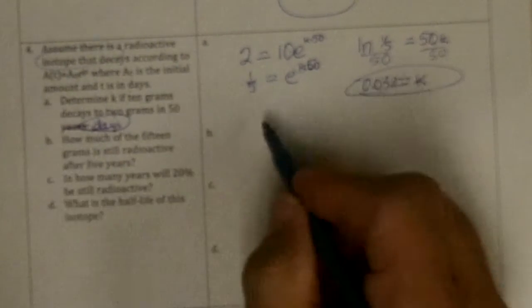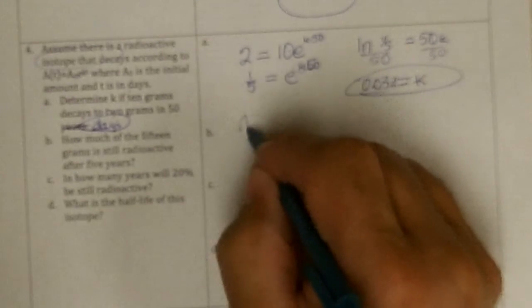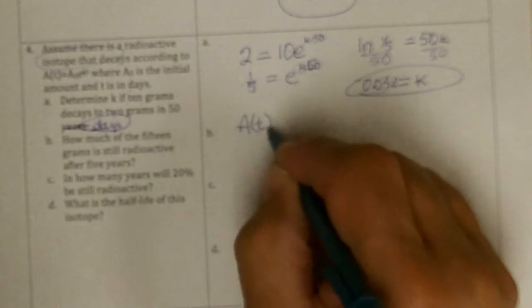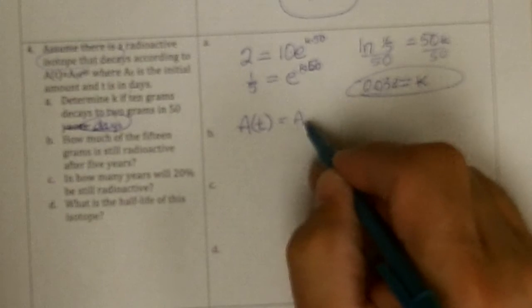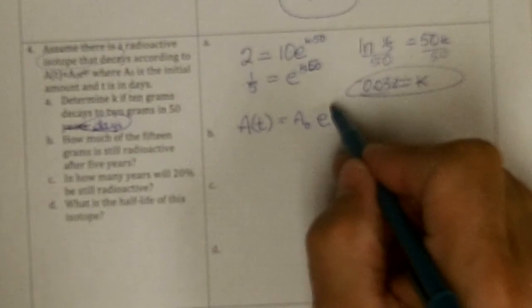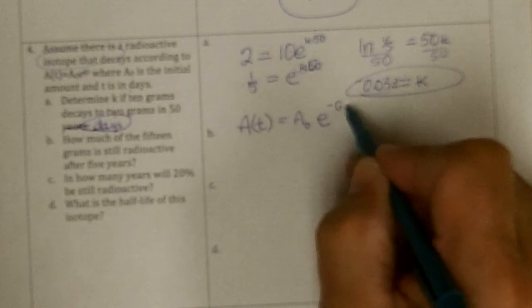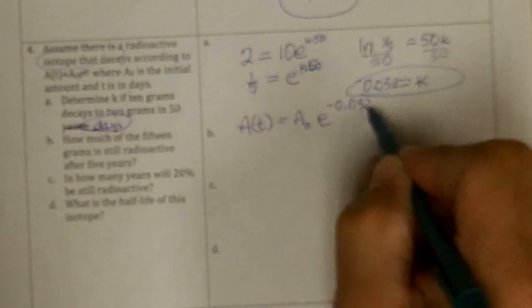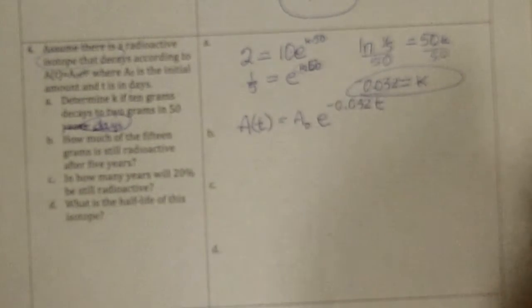So the equation now looks like the amount after some time is equal to the starting amount, e, to the negative 0.032, and then number of days, t.